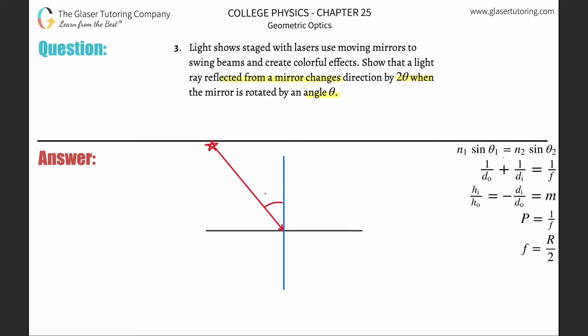Let's make the angle of incidence 20 degrees. That means the reflected ray will also have the same angle of reflection — also 20 degrees. If the angle of incidence is 20, then the complementary angle in here is 70 degrees. That also means this other angle is 70 degrees.